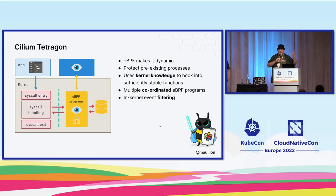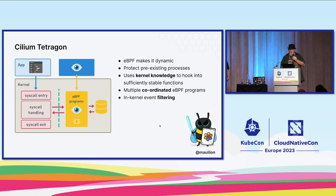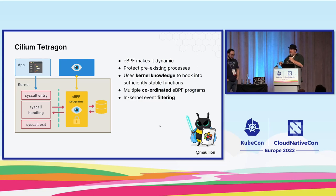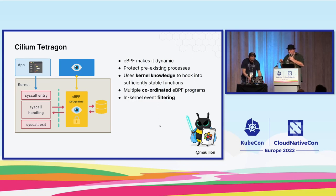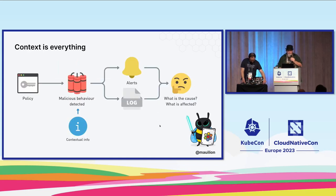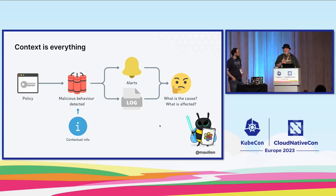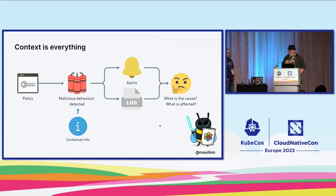We do have in-kernel event filtering, and we also have user-space filtering. Once the event has come down and we're propagating it into the stream that you're going to send to whatever collection you're looking for, you can also filter it at that point. Context is everything — context is king. If you don't have context about these things, it becomes very difficult to actually understand it. If you can't measure it, you can't improve it.